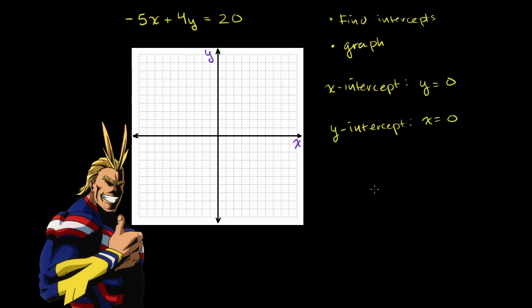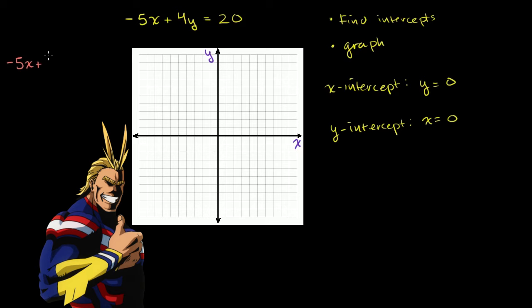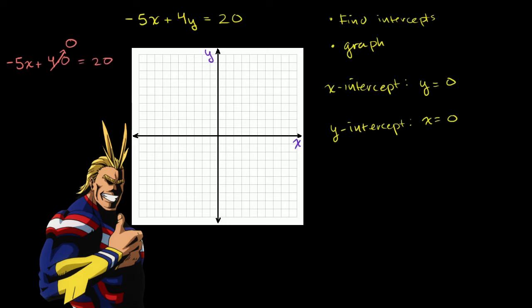So to figure out the intercepts, let's set y equal to 0 in this equation and solve for x. And then let's set x equal to 0 and solve for y. So when y is equal to 0, what does this equation become? You get -5x + 4y. Well, we're saying y is 0, so 4 times 0 is equal to 20. 4 times 0 is just 0, so we can just not write that. So we have -5x is equal to 20.